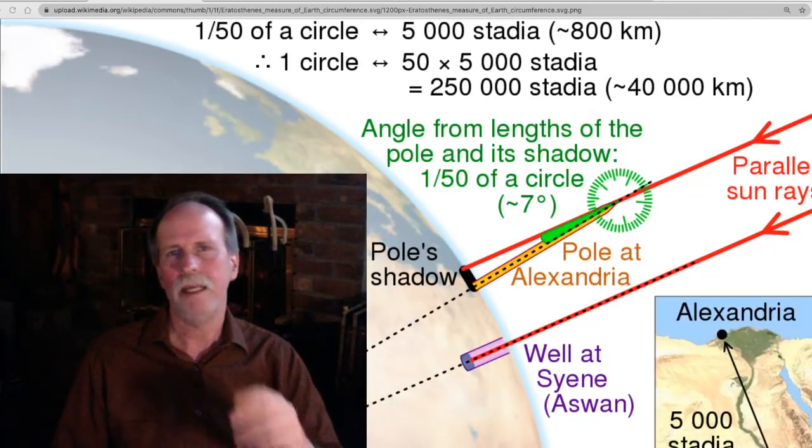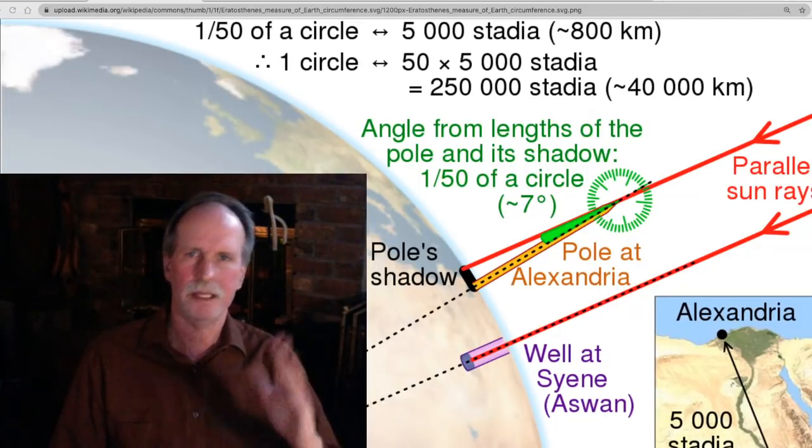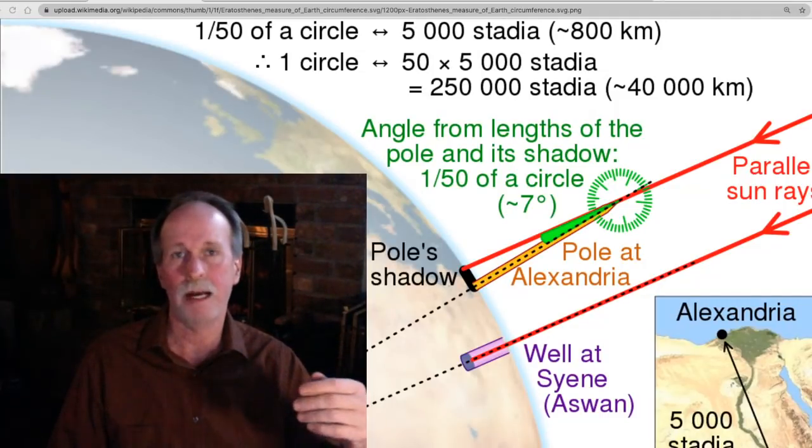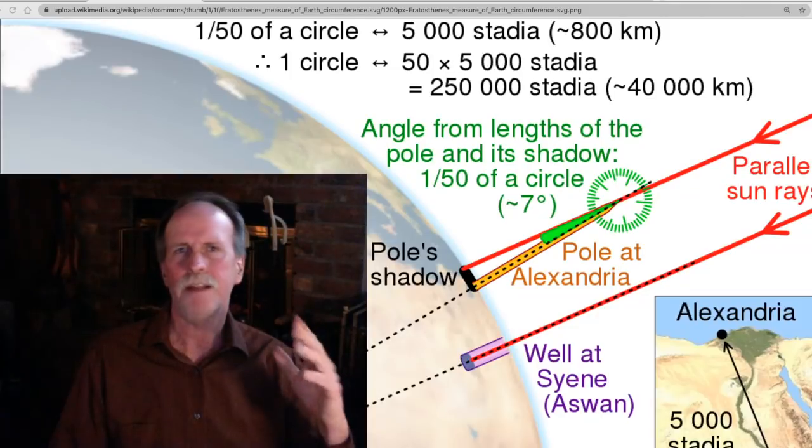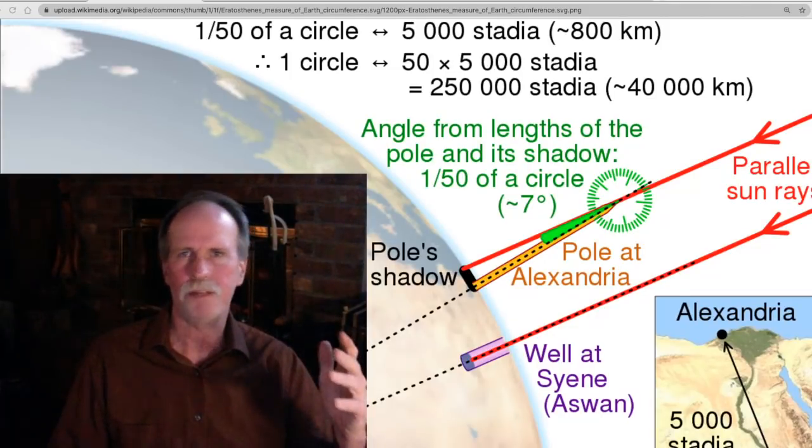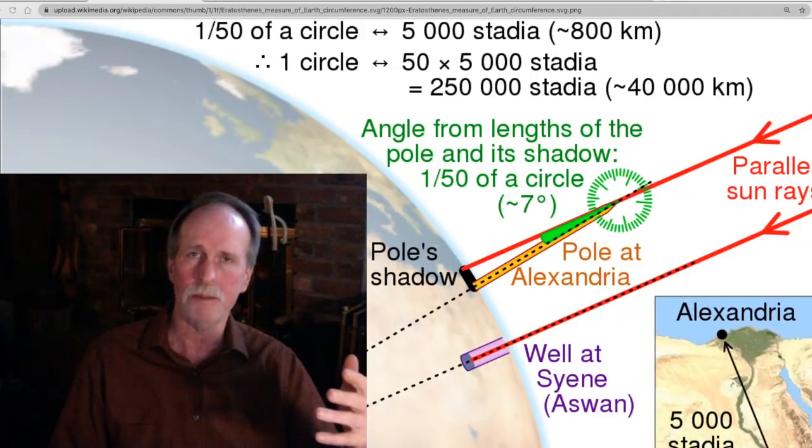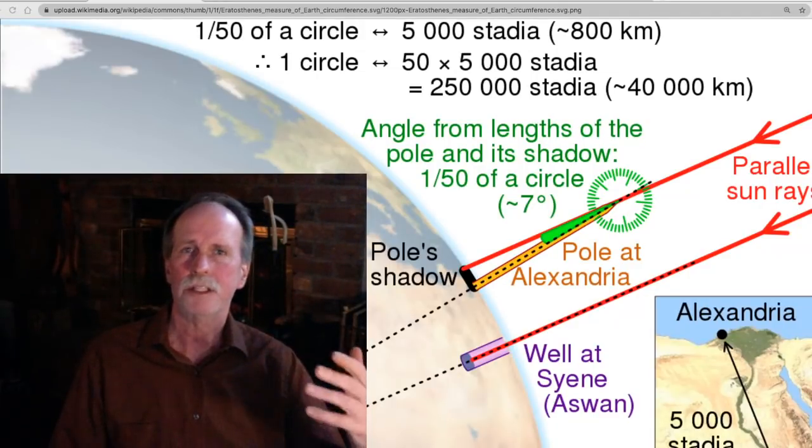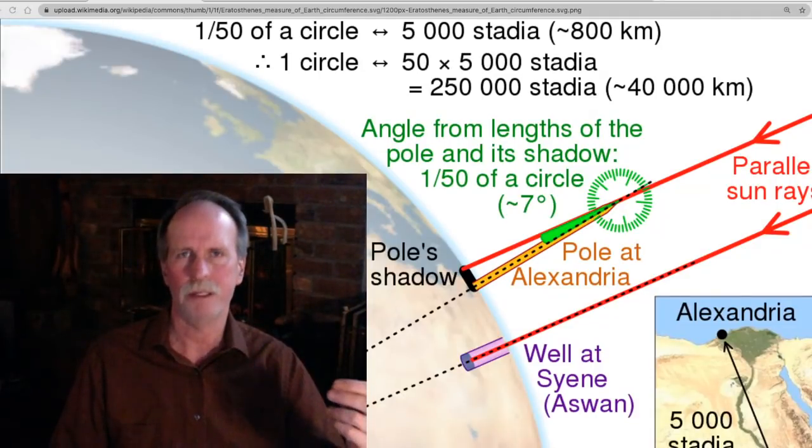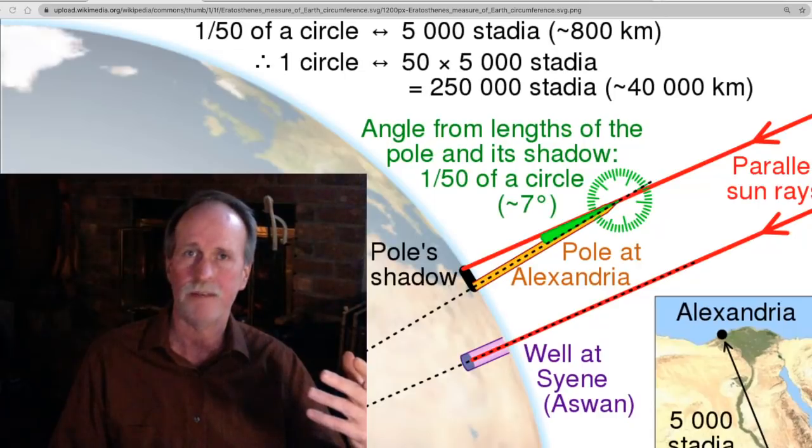On that same day, he measured the shadow cast by a stick in Alexandria, a surveyed 500 miles north. He found that that shadow was approximately 7 degrees, or about 1/50th of a circle, and he correctly assumed, based on that, that the circumference of the Earth would be about 50 times 500 miles, or 25,000 miles.